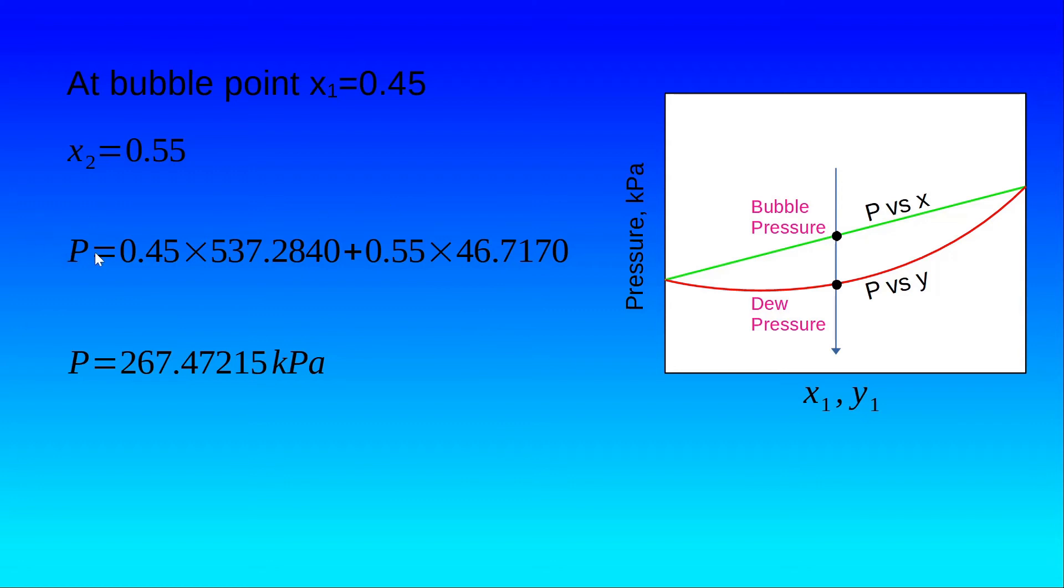Now applying Raoult's law, we get P = 0.45×537.2840 + 0.55×46.7170. Here P is the bubble pressure. Why? Because we are calculating this and the concentration in the liquid phase of n-heptane is 0.45. So we use this equation and we calculate the bubble pressure. The bubble pressure is 267.47 kPa.